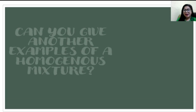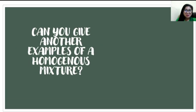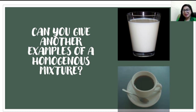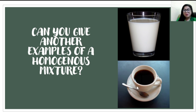Can you give me another example of a homogeneous mixture? We have milk — the milk powder and sugar are evenly distributed in the mixture, so we cannot see the milk powder or sugar anymore. We also have a coffee mixture where we cannot visibly see the coffee powder, creamer, or sugar. Because they are evenly distributed, it is under homogeneous mixture.